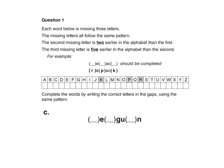For example, here you can see the second missing letter, the P, is two earlier in the alphabet than the first missing letter, which is an R. And the third missing letter is five earlier in the alphabet than the second.